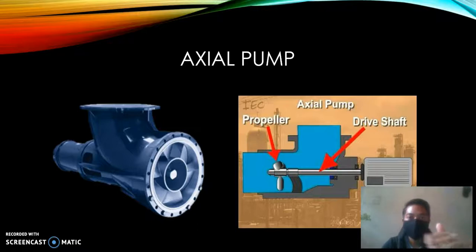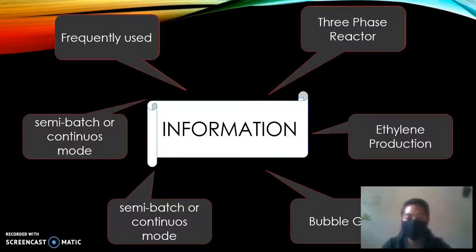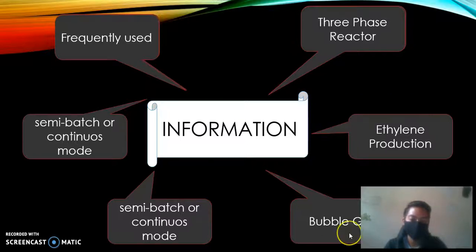Slurry loop reactors are usually used in a polymerization process. From research, slurry loop reactors are three-phase reactors, which include solid, liquid, and gas. This reactor is usually used in the production of olefins, so olefin production usually uses this type of reactor.